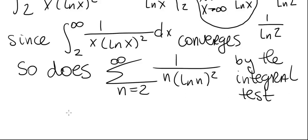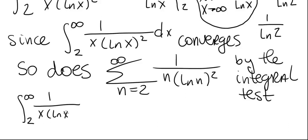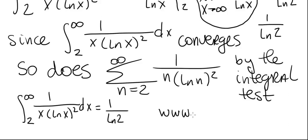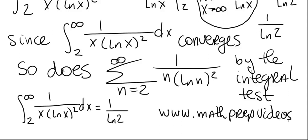The series converges. We have to be careful not to conclude too much from the integral test: since the integral converges to 1 divided by ln of 2, it is tempting to say the series also converges to 1 divided by ln of 2, but that is not true. All we can say is that if the integral converges, so does the series — we cannot say the integral and the series converge to the same limit. For more videos, visit www.mathprepvideos.com.